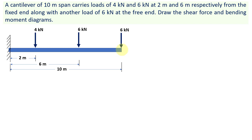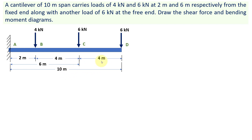Now let us mark the points where we are going to find out the shear force values as well as bending moments. The first point is A at the fixed end. The next point is B where the 4 kilonewtons load is acting. Point C is where the 6 kilonewton load is acting, and point D is at the free end where the other 6 kilonewtons load acts. The distance between B and C is 6 minus 2, which is 4 meters, and between C and D it is 10 minus 6, which is also 4 meters.